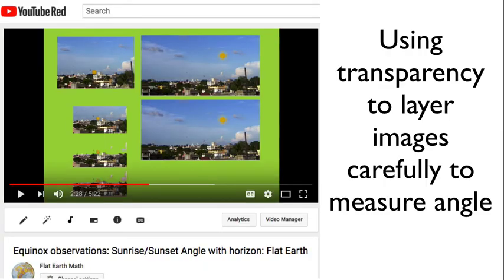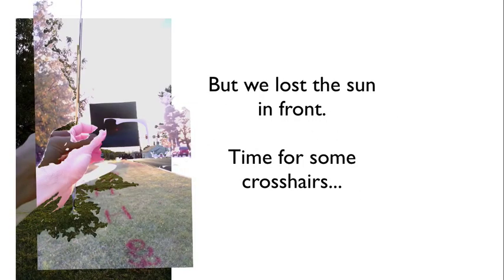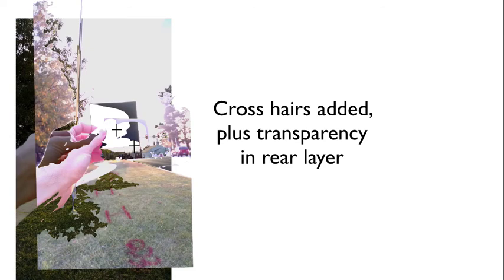In the other video I talked about how you can use transparency — I'm just using Apple Keynote; I never learned Photoshop — but those of you who are more sophisticated can do this pretty well. Using transparency to very carefully line up the two photos so you can make this measurement. Here you see the two photos lined up, one in front, one in the back. There's the little dot, which is kind of hard to see in the glare. I put in some crosshairs where the sun was, then added more transparency so you could really see where the sun's location was on those two photos.